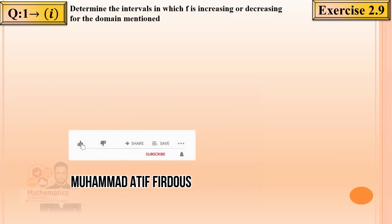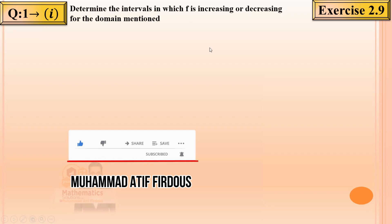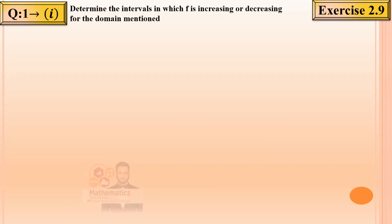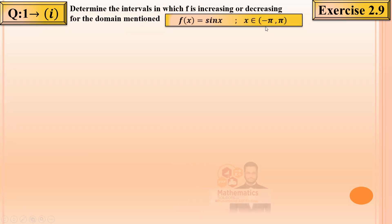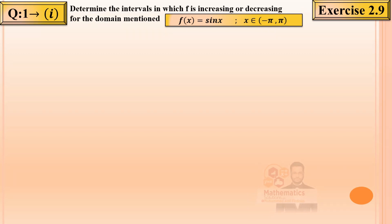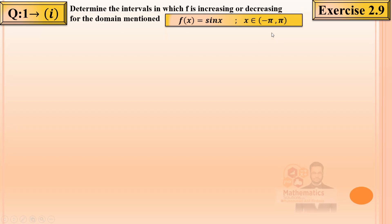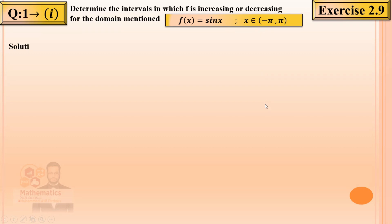Question number 1: find where the function is increasing and where it is decreasing. The function given is sine x on the interval minus pi to pi — open interval. We need to find the intervals within minus pi to pi where the function increases and decreases. We will piece the interval to check separately.